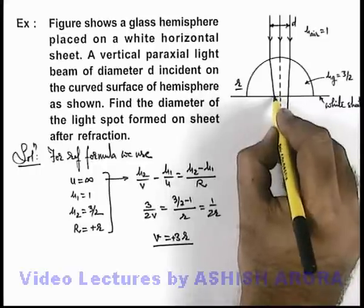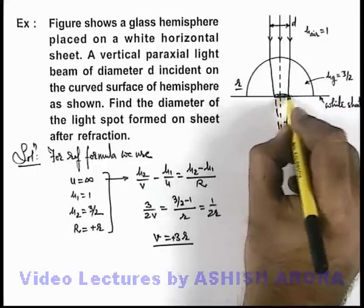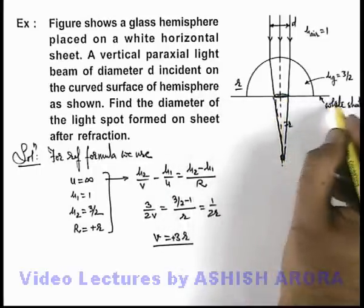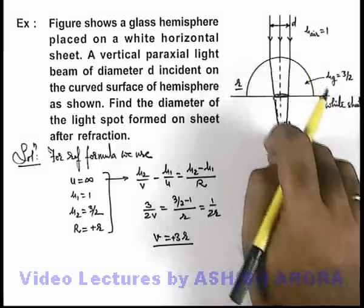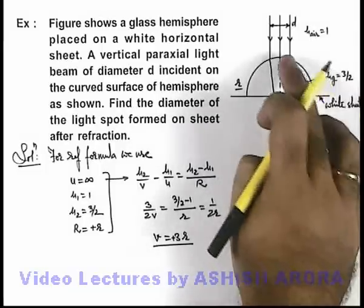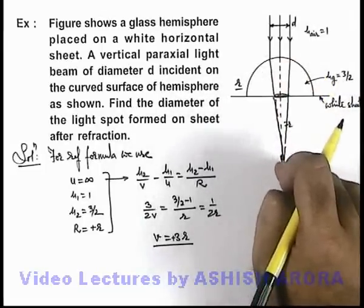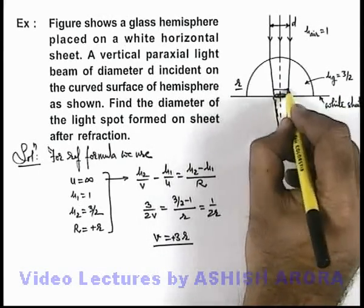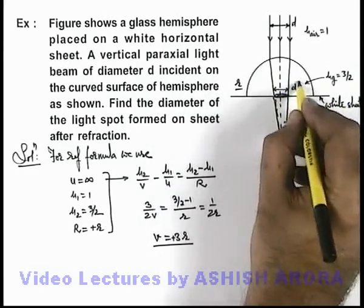This will be the spot which will be produced on the white sheet. If the sheet is not present and the whole medium is filled with glass, the image would have been produced at this point. In this situation, the diameter can be written as d'.